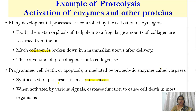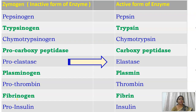Another example is pro-caspases. These are proteins required for programmed cell death, or apoptosis. They are synthesized in inactive form called pro-caspases and are activated by various signals. These caspases function to cause cell death in most organisms.